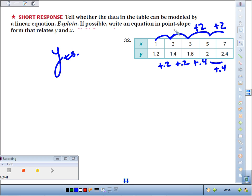Write an equation in point-slope form. You can use any point you want. I'm going to use the point 1 and the y-coordinate 1.2. So I do y minus my y-coordinate, 1.2,